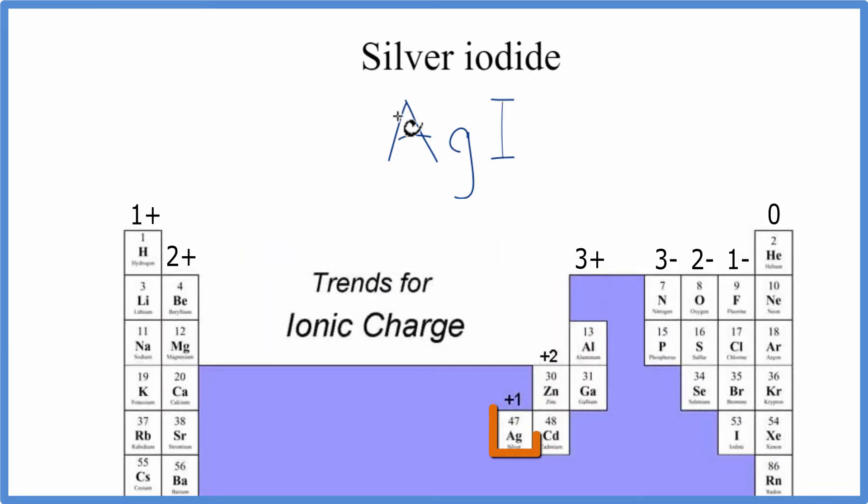So back to the periodic table, and silver has a 1 plus charge. Silver's a little bit strange, it's a transition metal, but its charge is always 1 plus, so it's a bit of an exception there.